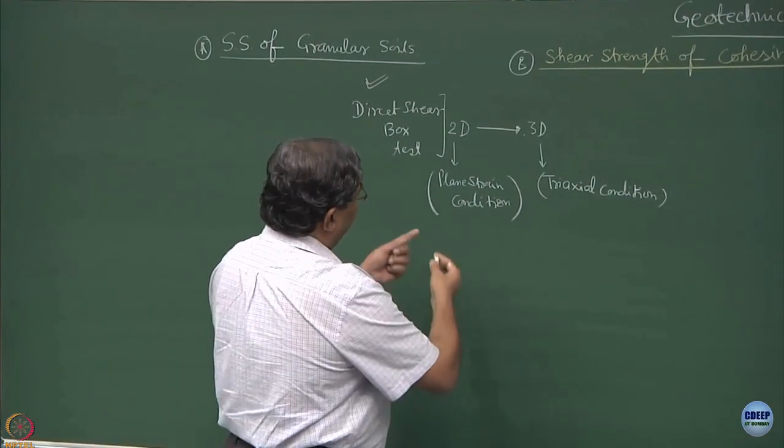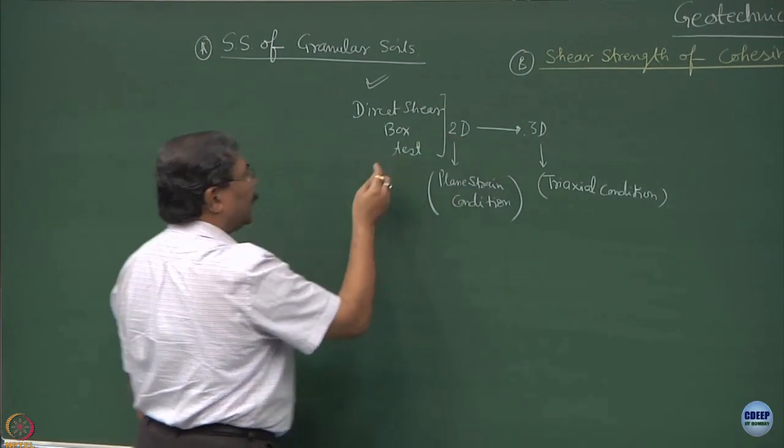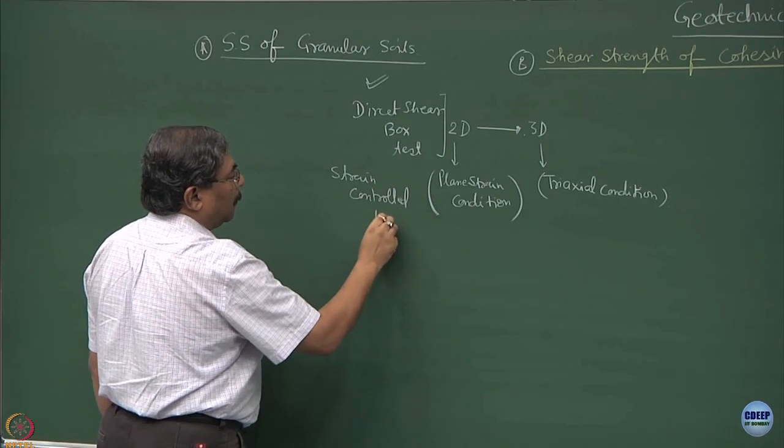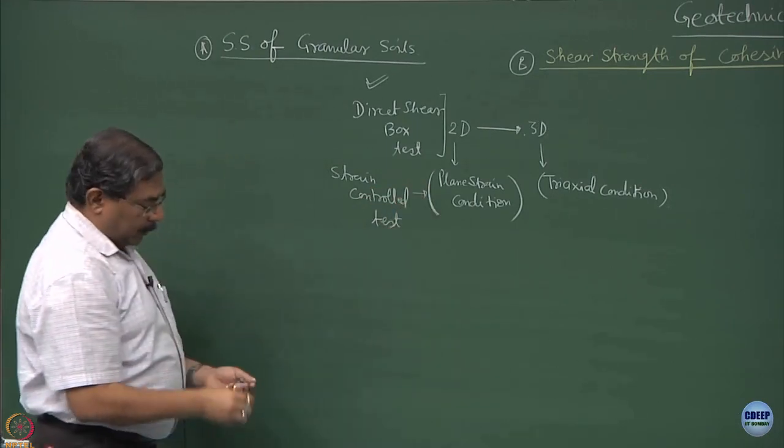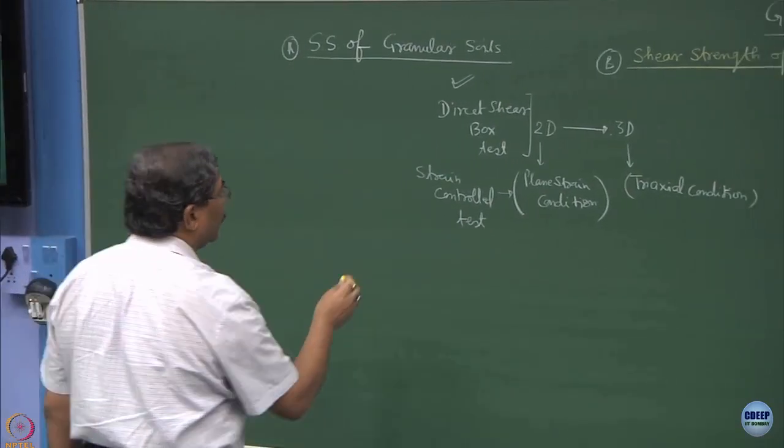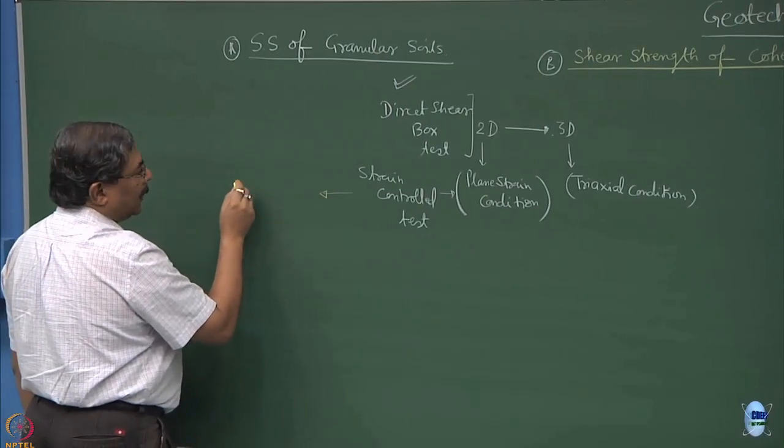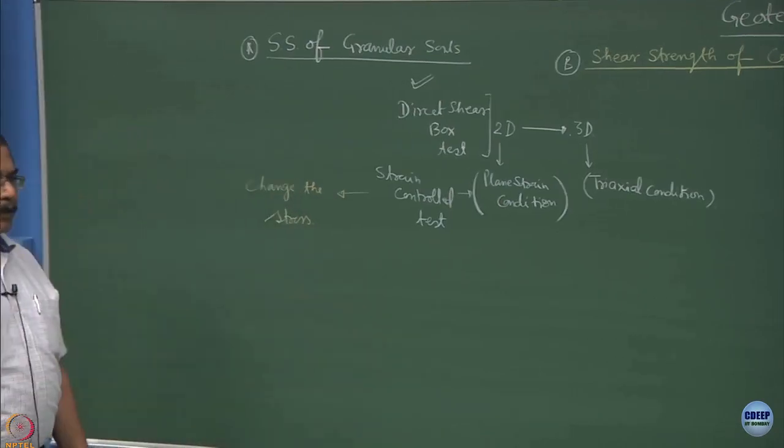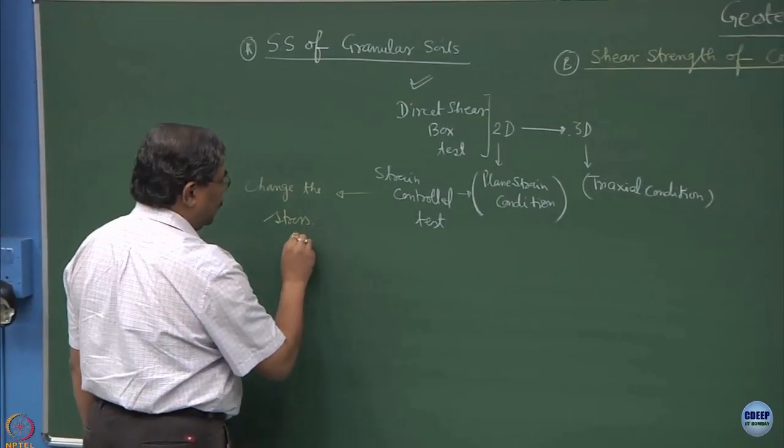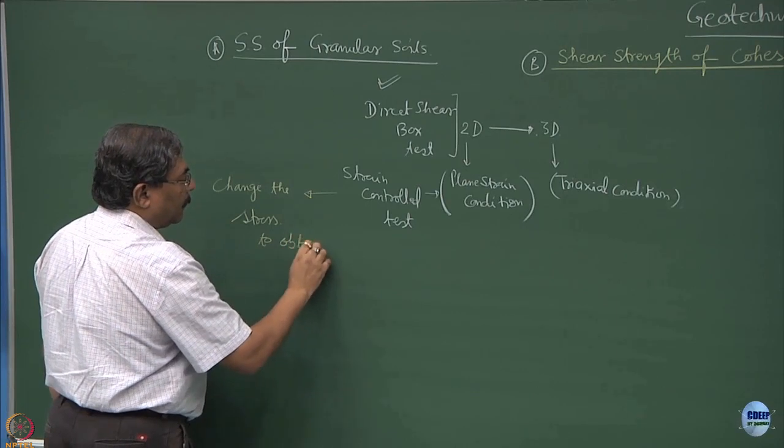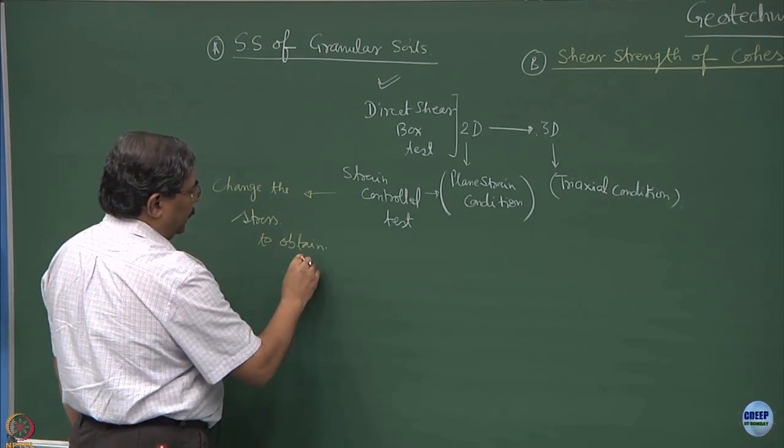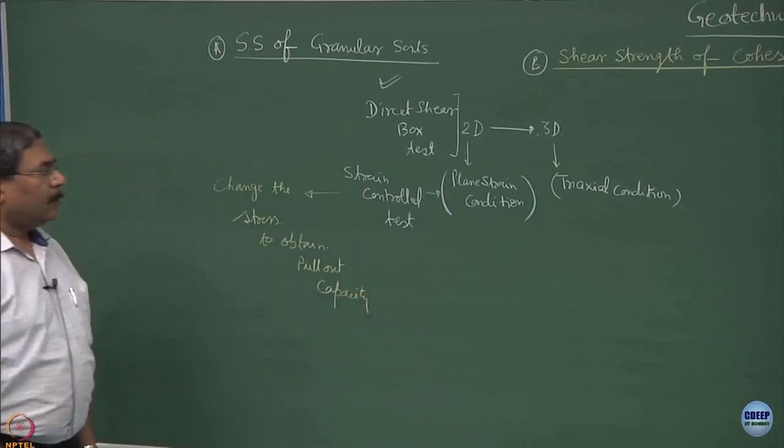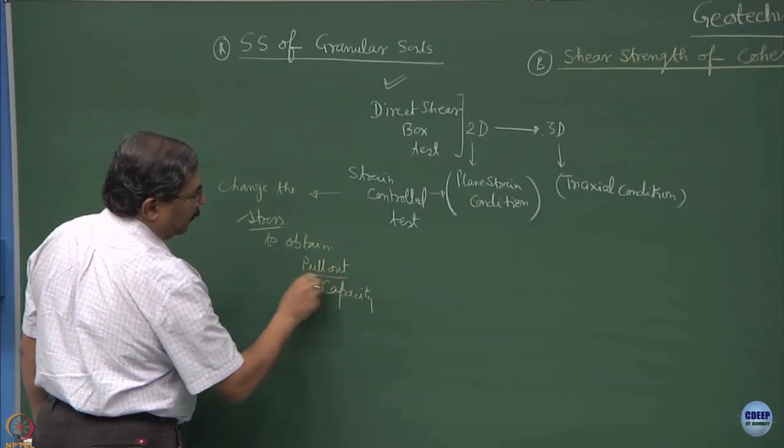A good example of transforming from a two-dimensional strain control test. Now, suppose if I want to do a stress control test. What I have to do is I have to change the stress and find out the strength of the material or the shear strength of the material. Mostly we find out the pull out capacity.